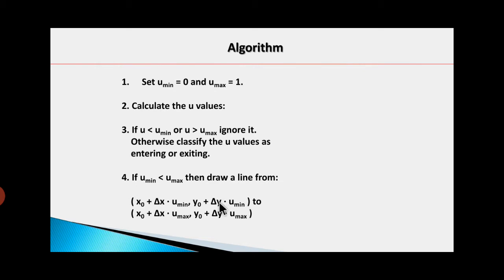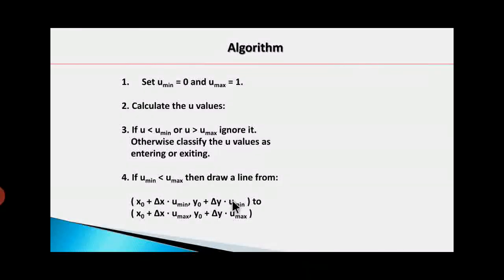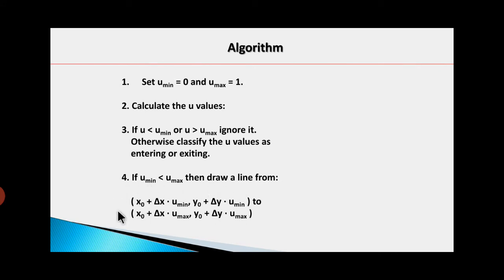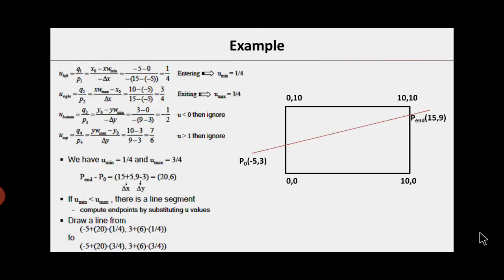The second intersection point coordinates are x0 + delta_x·u_max and y0 + delta_y·u_max. The portion of the line from the first to the second intersection point is inside the clip window; all other portions of the line outside that range are discarded because they are outside the clip window. This is a very simple algorithm and you have to apply it to solve numerical problems.